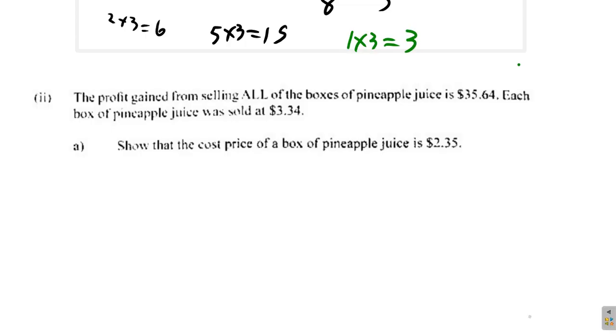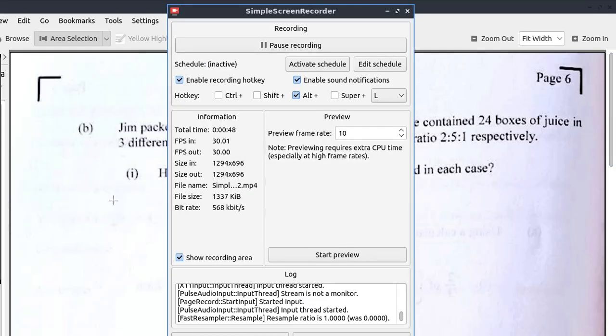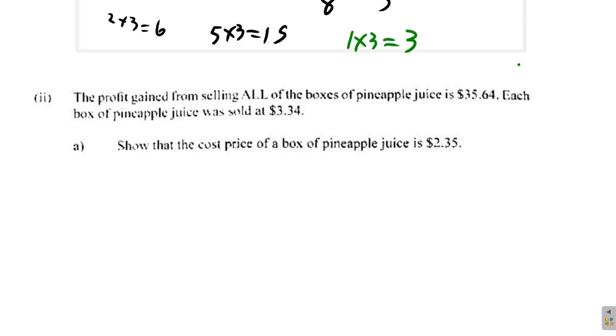Now here, let me just check on something, just to make sure things are going well. Okay, good. So here now, you have the selling price is equal to $3.34, cost price is equal to $2.35, selling price minus cost price. Yes, there's a profit on each.